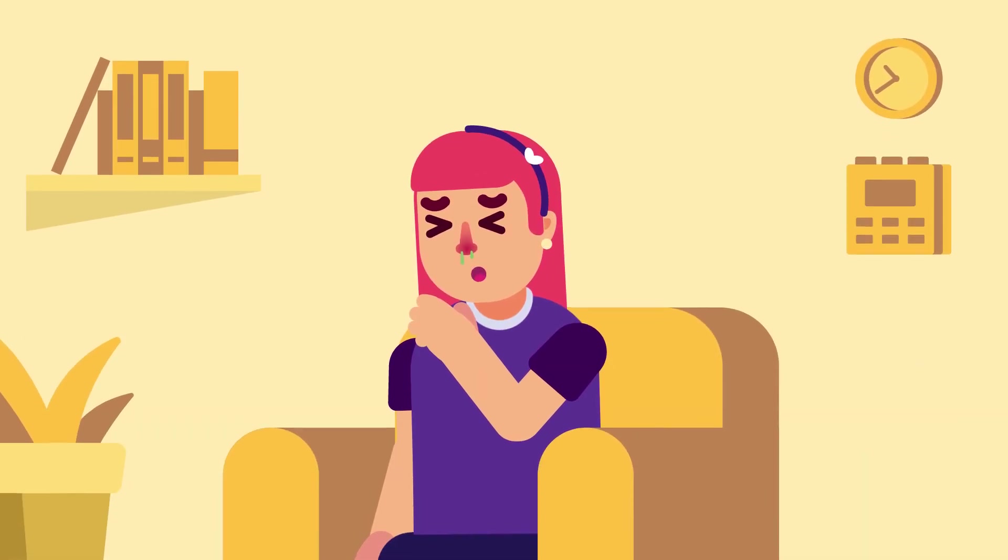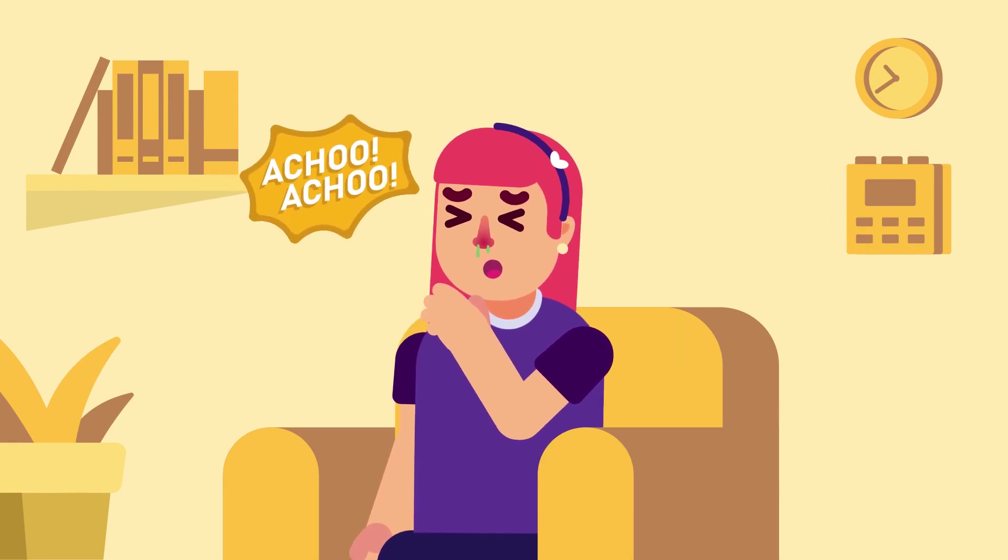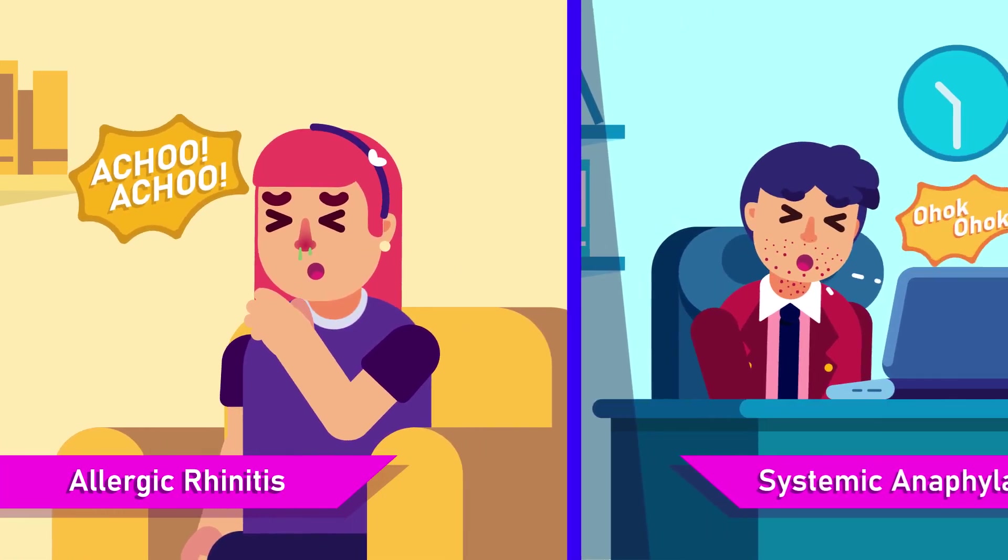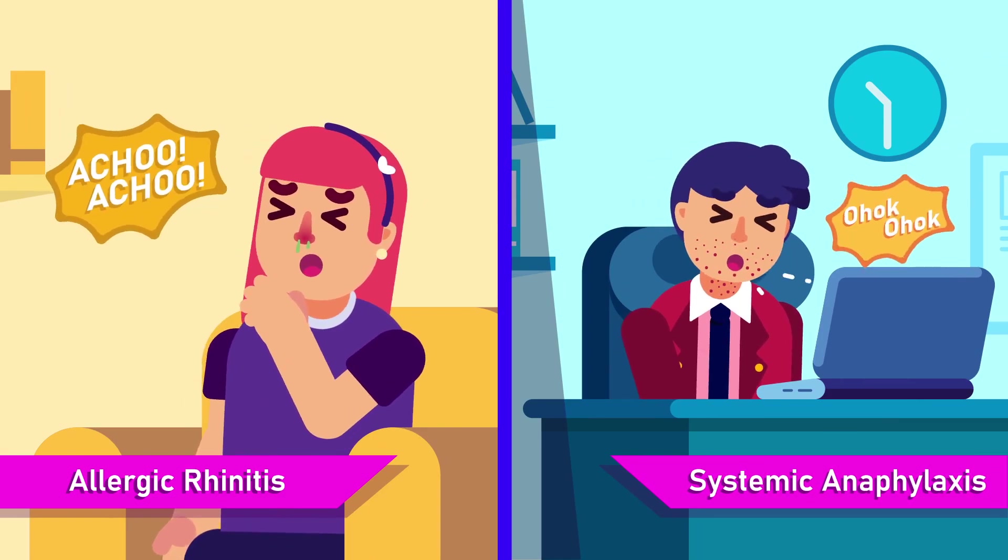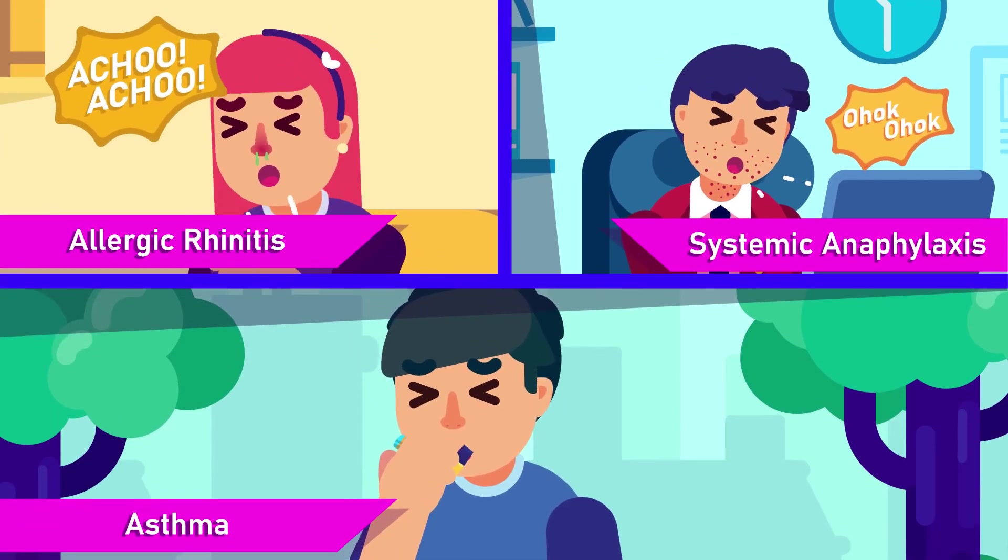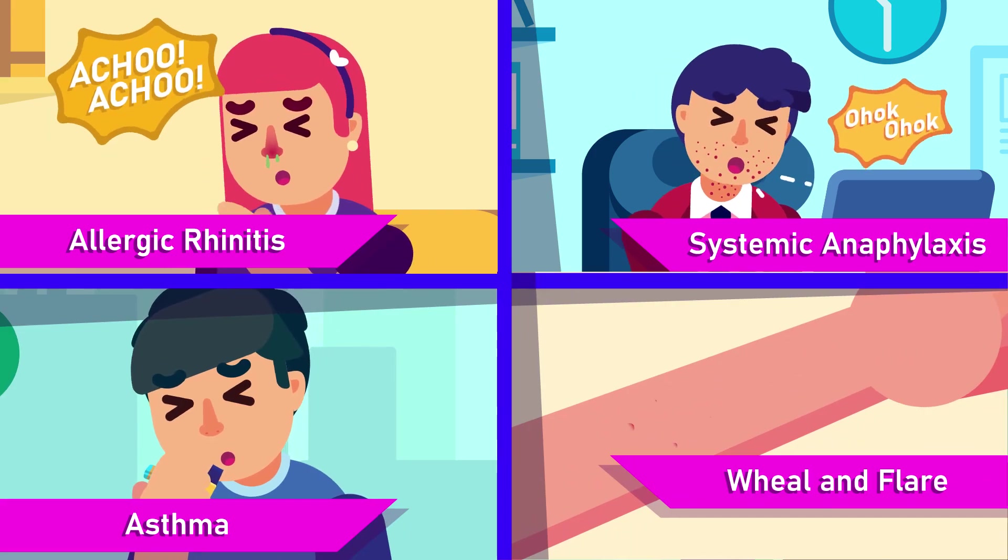Type 1 hypersensitivity examples are: 1. Allergic rhinitis. 2. Systemic anaphylaxis. 3. Asthma. 4. Wheal and flare.